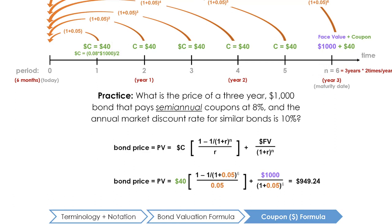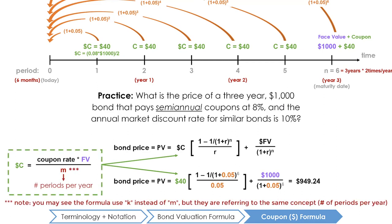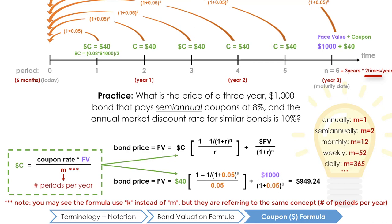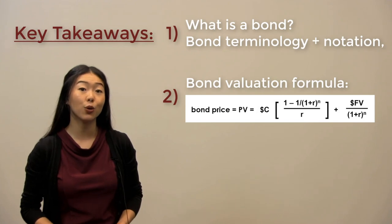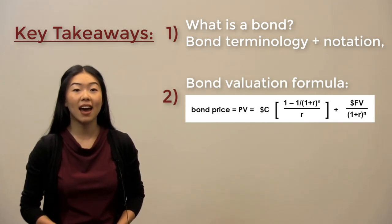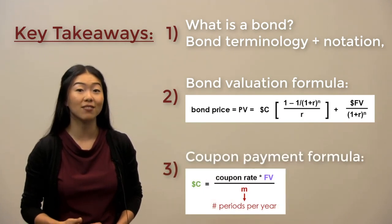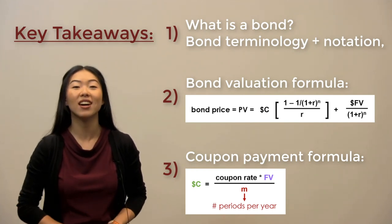It is crucial to remember that the dollar amount coupons can occur at different frequencies — monthly, semi-annual, annual, etc. — but the coupon rate is always expressed annually. We can calculate the dollar amount coupons using the coupon payment formula, where M is the number of periods per year that the issuer will pay the bond holder. In the first example, M was equal to 1 for annual payments; in the second example, M equaled 2 for semi-annual payments. In conclusion, we have learned what a bond is, the correct terminology and notation, how to calculate the present value or price of a bond using the bond valuation formula, and how to calculate dollar amount coupon payments for different frequencies using the coupon payment formula.